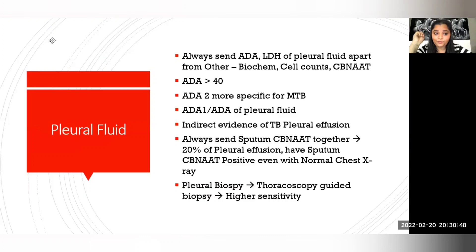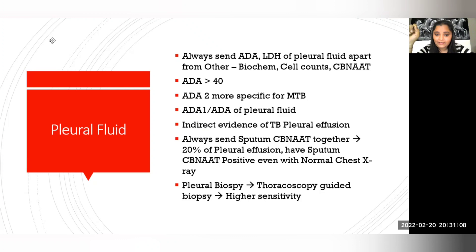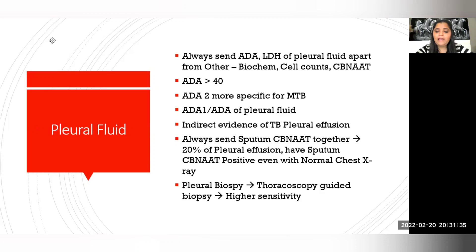For pleural TB, apart from usual biochemistry and cell counts, send CB-NAT and also send for ADA and LDH of the pleural fluid. ADA of more than 40 is significant. There is ADA1 and ADA2 — ADA2 is more specific for MTB, while ADA1 is for bacterial infection or empyema. The ratio ADA1/ADA has been shown to be more sensitive than ADA alone, and provides indirect evidence of TB pleural effusion. Always send concomitant sputum for CB-NAT as well.